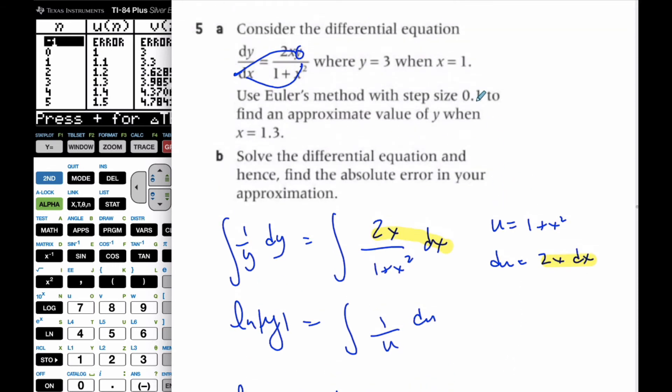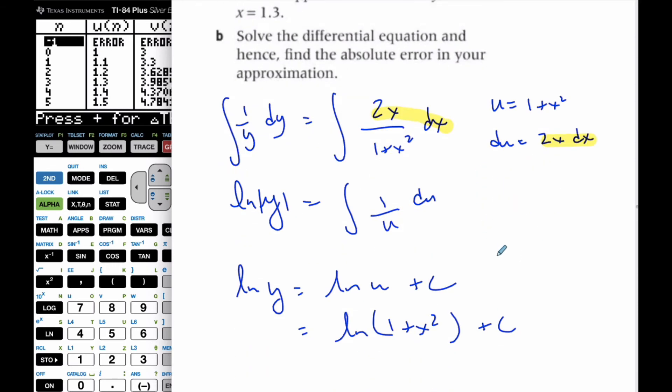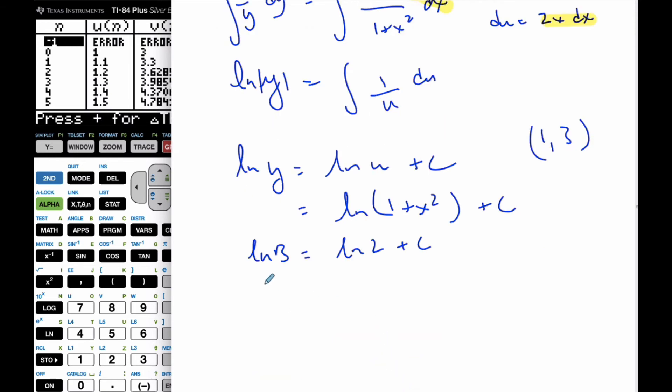which is going to be equal to ln(1 plus x squared) plus c. And I know my initial conditions are the point (1, 3). So if I plug in ln of 3 is equal to ln of 2 plus c. So ln 3 minus ln 2 is equal to c.